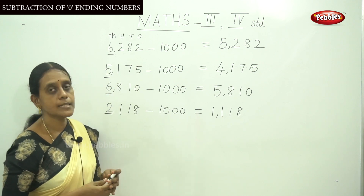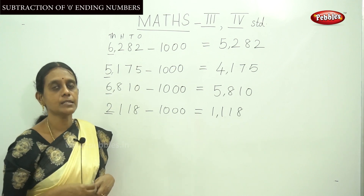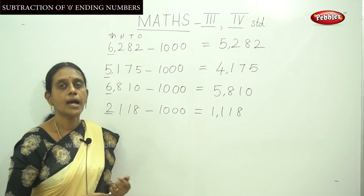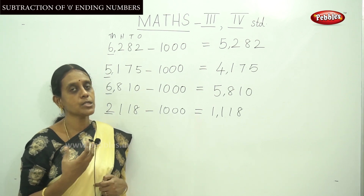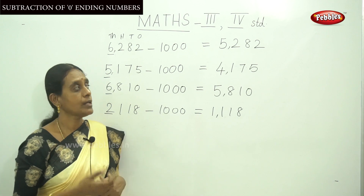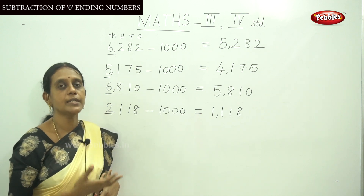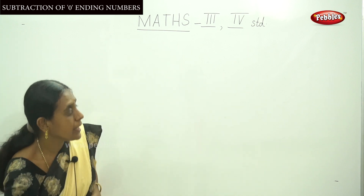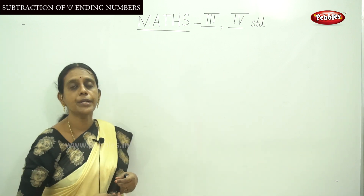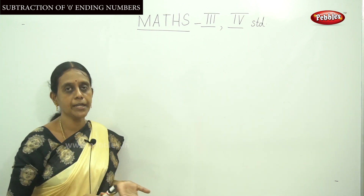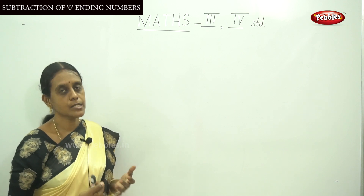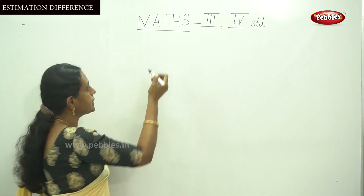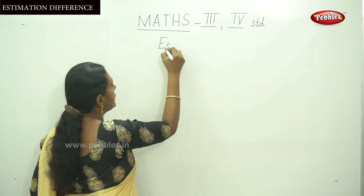Now let me do the next topic — estimating the difference. As we learnt in our addition topic about estimation sum, now we are going to do estimation difference. Let me recap our rounding of numbers — nearest 10, nearest hundred, and nearest thousand.